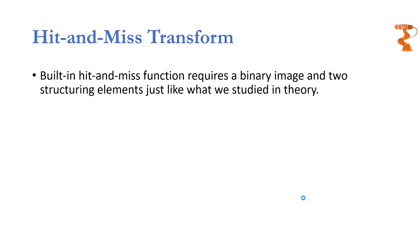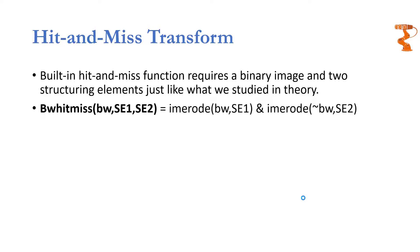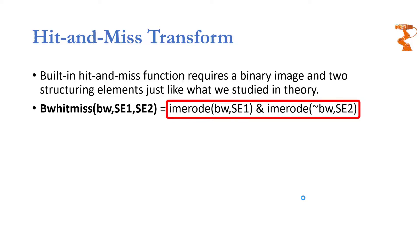In MATLAB, there are two ways to implement hit and miss transform. The first one requires the image and two structuring elements: one for detection of the object and the other for background check. The built-in function bwhitmiss implements automatically the two stages of the hit and miss transform. You may also implement the two stages manually if you wish.